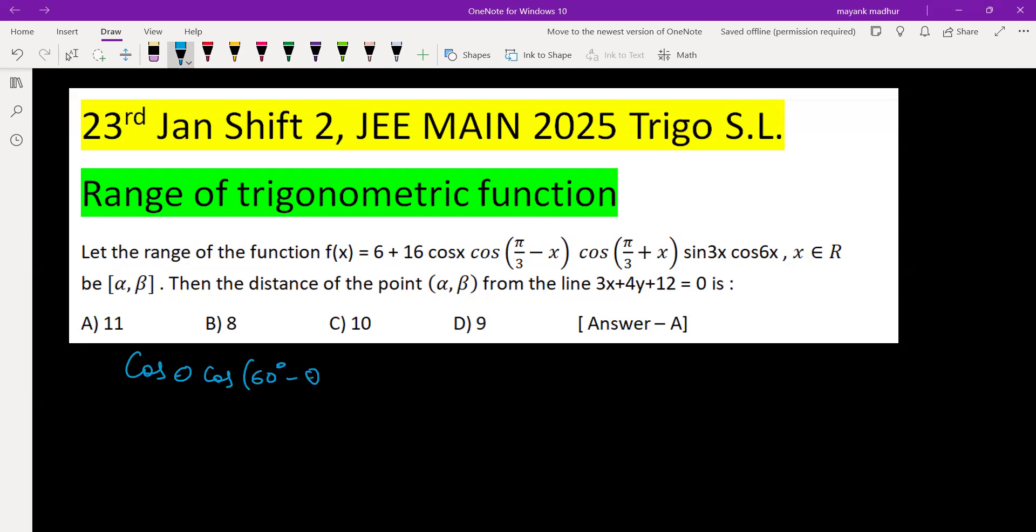cos 60 degree minus theta into cos 60 degree plus theta is equal to 1 by 4 cos 3 theta. This is a very basic formula in trigonometry and we are going to use it. So what is f(x)? f(x) is 6 plus 16 times, and this part cos x cos 60 minus x cos 60 plus x, this will be 1 by 4 cos 3x.